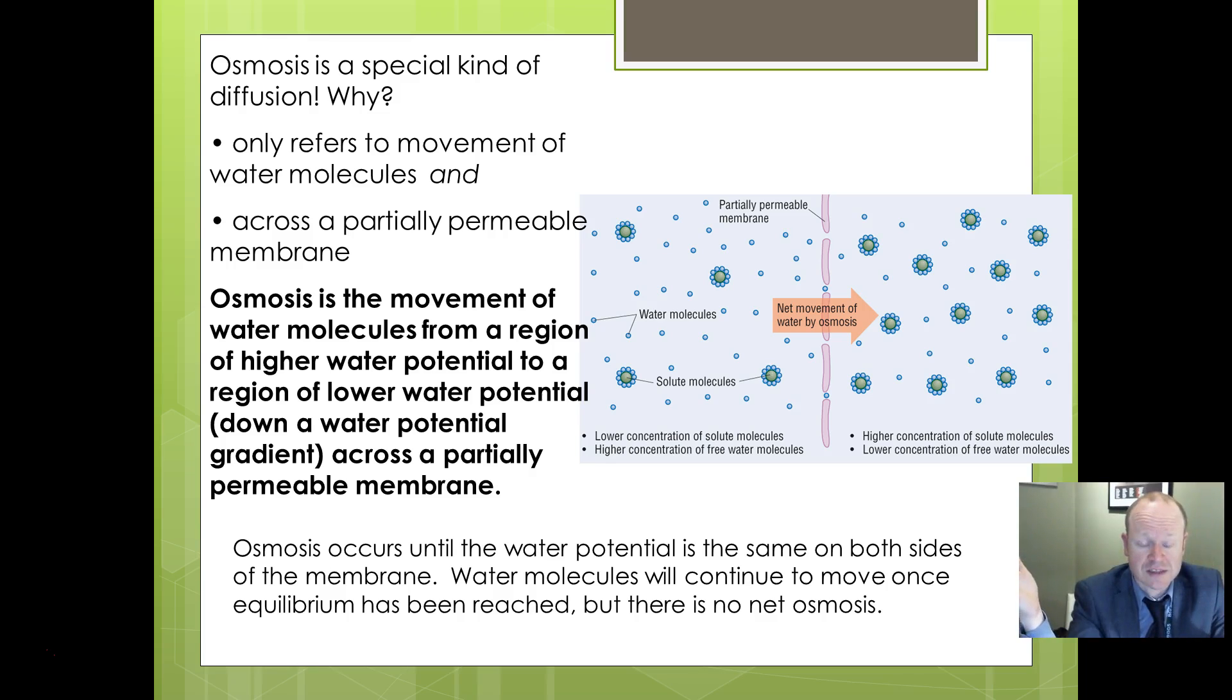Now osmosis will continue to occur until you get what we call equilibrium - in other words, a balance between both sides where both sides are equally concentrated. If it's moving from one side of a membrane to the other, water continues to move until both sides are equally concentrated. At that point water molecules are still moving, they're randomly moving and will continue to move, but we don't talk about there being any net gain or net osmosis. But water molecules will still continue to move even if equilibrium or balance has been reached.